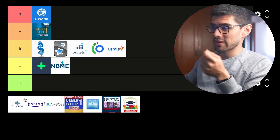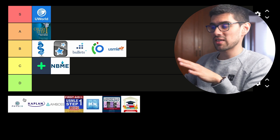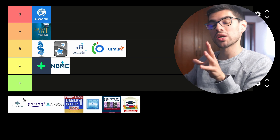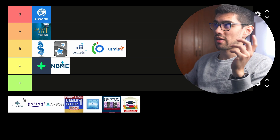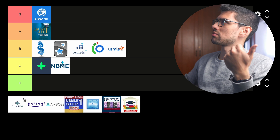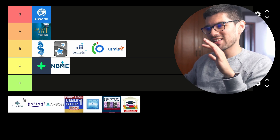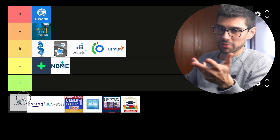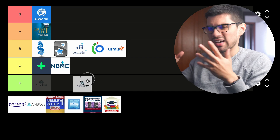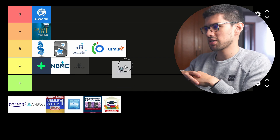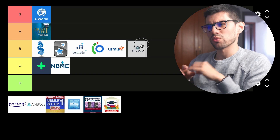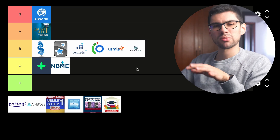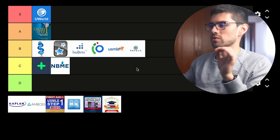In a similar vein, we have Physeo, which as far as I know is a video-only platform. I used it during my Step 1 prep to improve my weakest subjects at the time, which were biochemistry and something else. I must say I was really impressed with the quality of the explanations in Physeo. I only watched a couple of blocks from a couple of subjects, but the videos I reviewed were really, really top-notch. So in my opinion, Physeo probably earns itself a spot in the B tier as well.